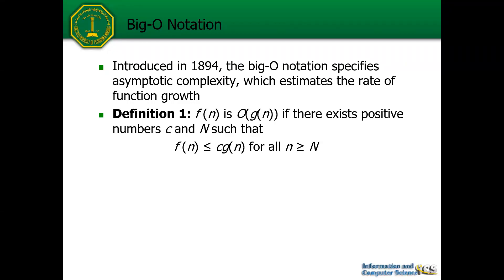Welcome to the lesson on Big O notation. This notation specifies the asymptotic complexity, which basically estimates how fast a certain function grows — as we increase the input of the function, as we increase n, how fast is the change in f, the function value.